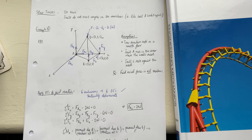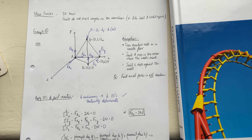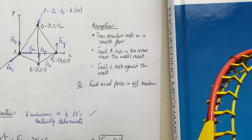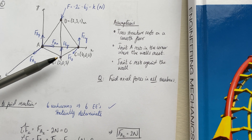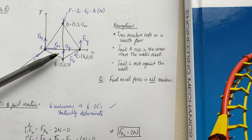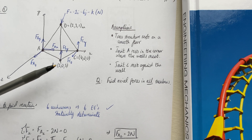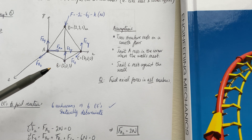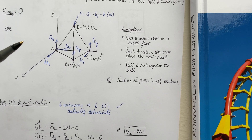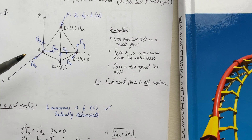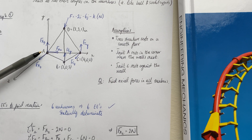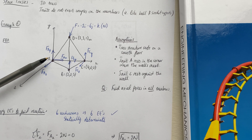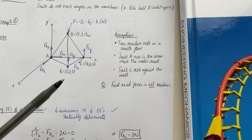There are some assumptions we have to make in order to solve this truss problem. The truss structure rests on a smooth floor, so we can model the node at point B as a roller support — it only has a reaction in the normal direction. Joint A rests in the corner where the walls meet, like the corner of a room with a floor in the xz-plane and walls in the xy and yz planes respectively. Joint A therefore has three reactions because it's prevented from translating, being pushed into the corner.